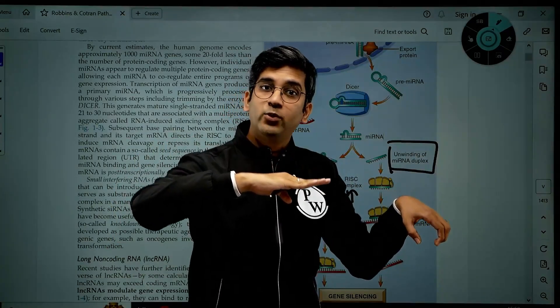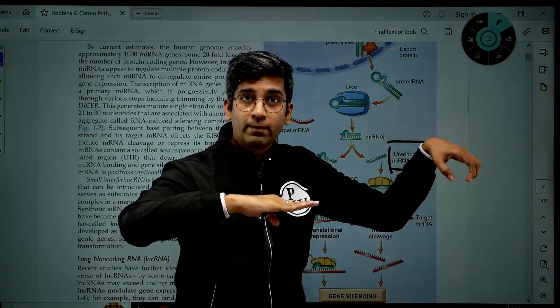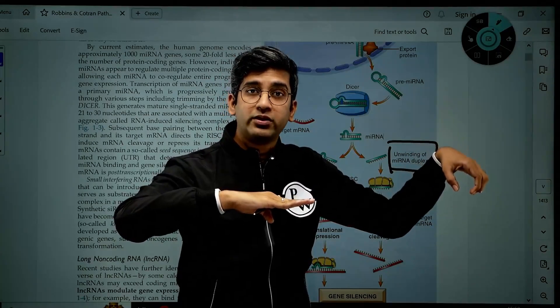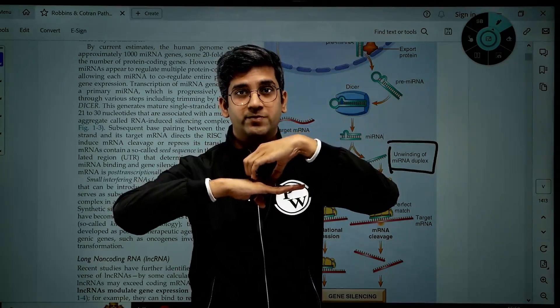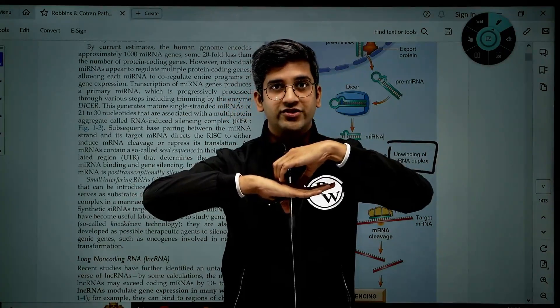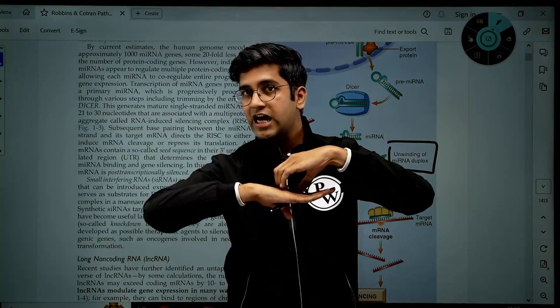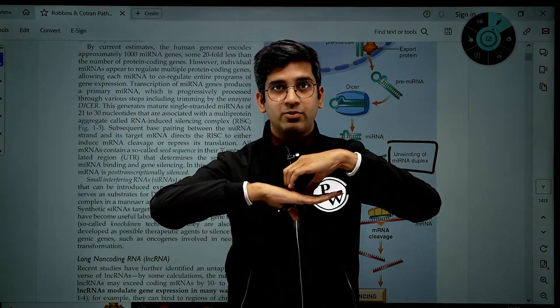I have an mRNA which is supposedly mutated. This RISC complex with the miRNA has two possibilities: it can come and bind to this. If it binds to this mRNA, do you think ribosomal RNA can read the protein or translate the protein? No.